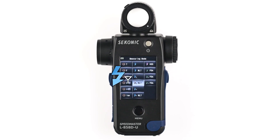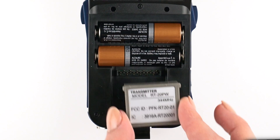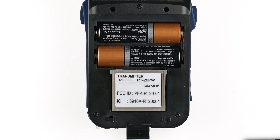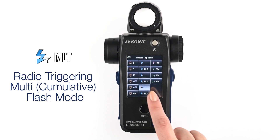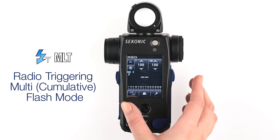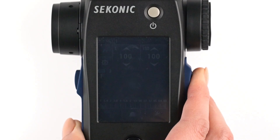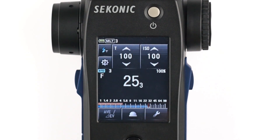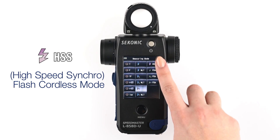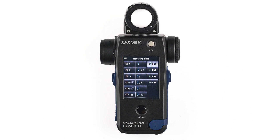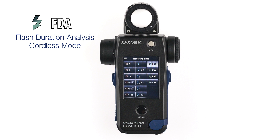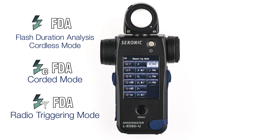The flash antenna icon is for radio flash measurements — this icon appears when you use the optional radio transmitter. The flash antenna multi icon is for cumulative readings when using a radio transmitter. The HSS icon is for measuring the flash output when using high-speed sync. Below this you have FDA for flash duration analysis measurement icons for un-corded, corded, and radio triggering with the optional radio transmitter.